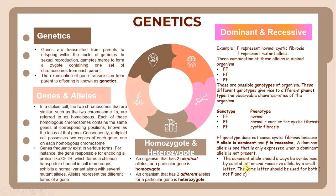The F genotype does not cause cystic fibrosis because the F allele is dominant, and the recessive allele is only expressed when the dominant allele is not present. The dominant allele should always be symbolised by a capital letter and the recessive allele by a lowercase letter. The same letter should be used for both, such as F and f.